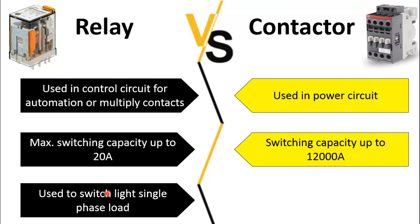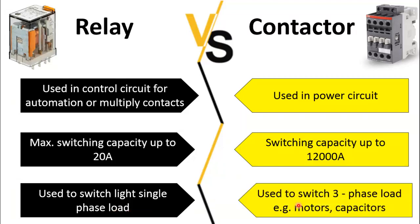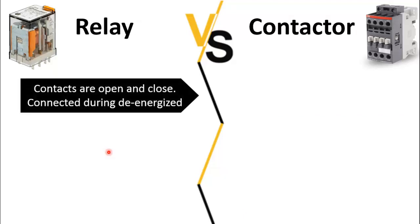The relay is used to switch light single-phase loads. Although a relay has four normally open and four normally closed auxiliary contacts and can be used to switch a three-phase load, most of the time since relay is used in the control circuit it is only used to switch a single-phase load — for example a bulb, a heater, or an electromagnetic coil. Whereas the contactor is used to switch a three-phase load because it has power contacts with a very high current capacity.